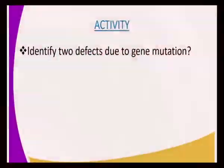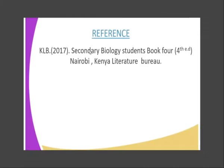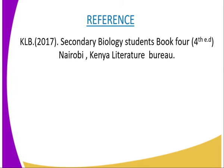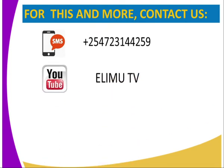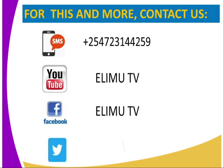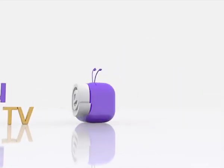Having explained that, here is your activity: you are required to identify two defects due to gene mutation. If you were keen during the lesson, you can identify them. For more on this lesson, you can refer to KLB 2017 Secondary Biology Student's Book, Form 4, which is the fourth edition, certified by the Kenya Literature Bureau. To get this biology lesson and many more, contact us via SMS at the number on screen, or subscribe to our YouTube channel, Facebook page, or Twitter at ElimuTV underscore Kenya.